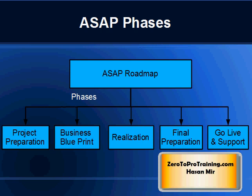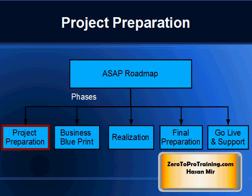The five phases are: Project Preparation, Business Blueprint, Realization, Final Preparation, and Going Live and Support. In the Project Preparation phase of the ASAP Roadmap, decision makers define clear project objectives and an efficient decision-making process. The project organization and roles are defined, and the implementation scope is finalized.